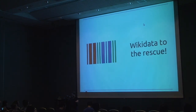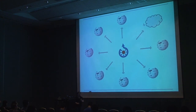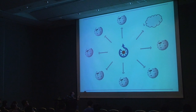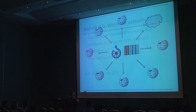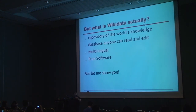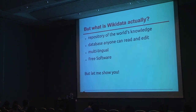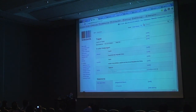Which is where Wikidata is one of the projects supposed to help. As I already said, we have Wikimedia Commons, which distributes images to all the Wikipedias, other projects and other websites — a central place to store images, videos and songs. Now Commons gets a little sister called Wikidata that does basically the same but for data. It's a repository of the world's knowledge that can be read and edited by anyone. It's multilingual and, of course, free software.